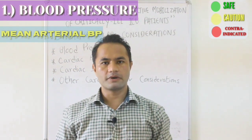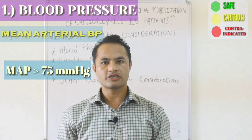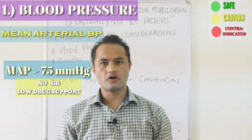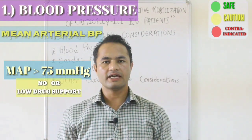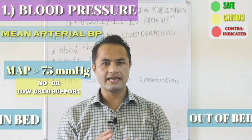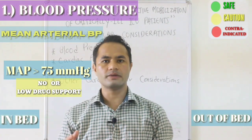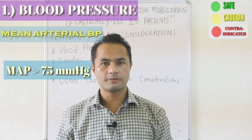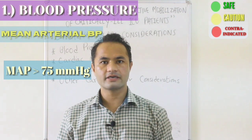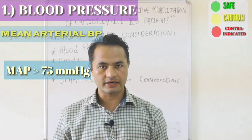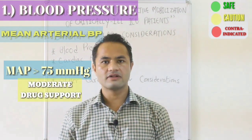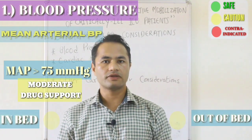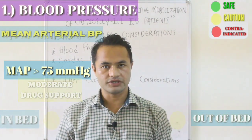If MAP is greater than its lower limit either with no support or with low level support, the patient can be mobilized in and out of the bed with no precautions. Patients with MAP greater than the lower limit of the target range but with moderate level support can be mobilized in and out of the bed with sufficient supervision.